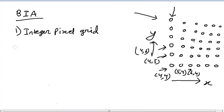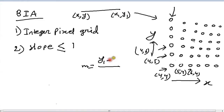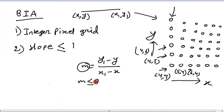The second condition is that the slope has to be less than or equal to 1. If we are given a line that starts at (x, y) and ends at (x1, y1), we calculate the slope as m equals (y1 minus y) over (x1 minus x). This m has to be less than or equal to 1 to use the BIA algorithm.